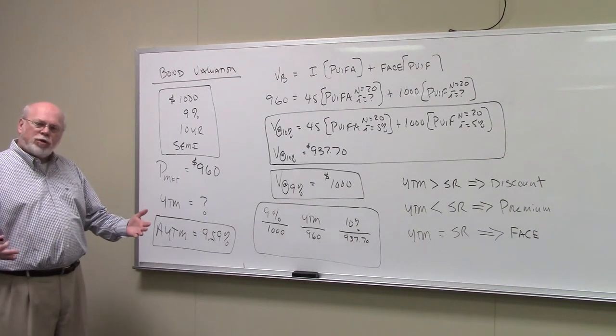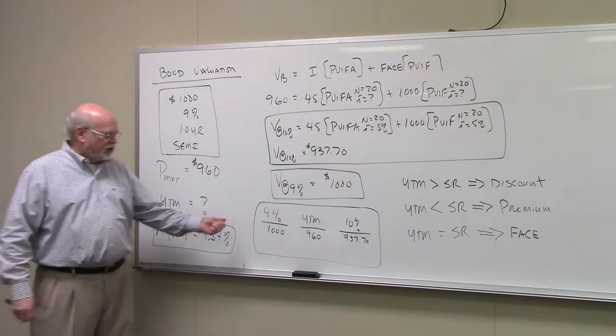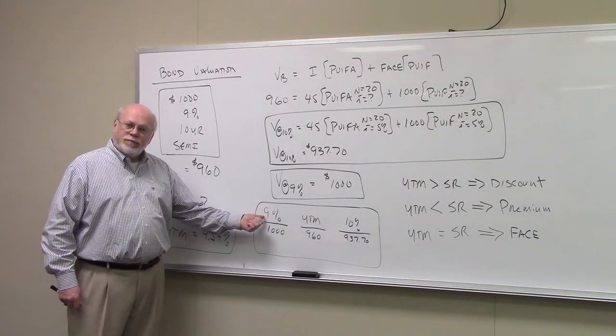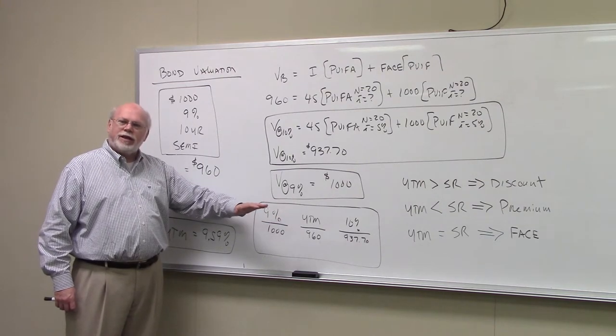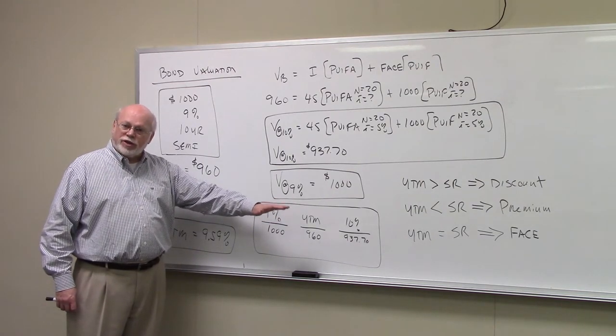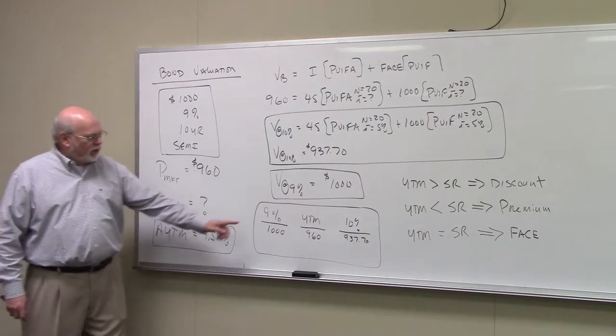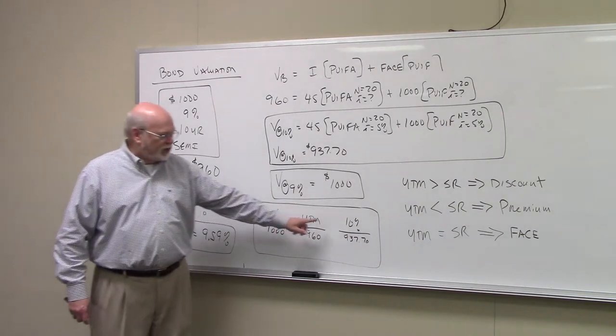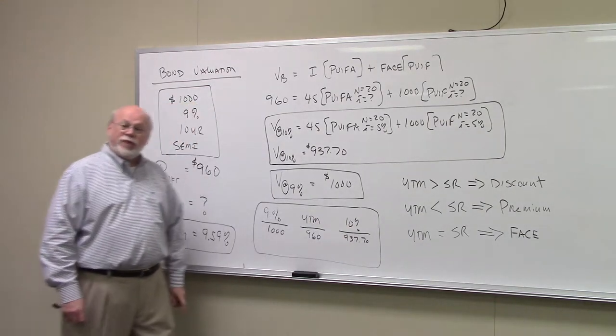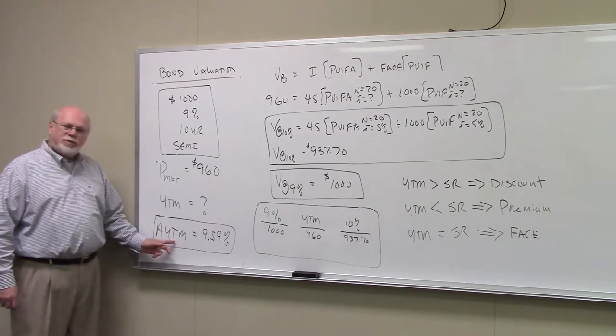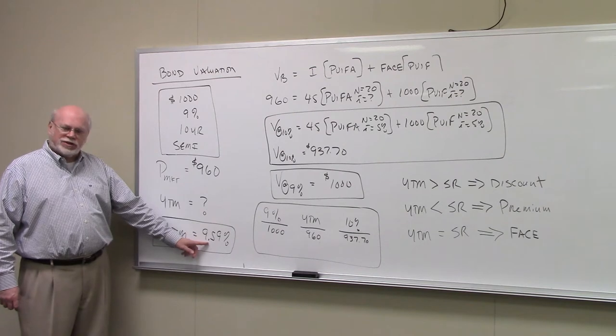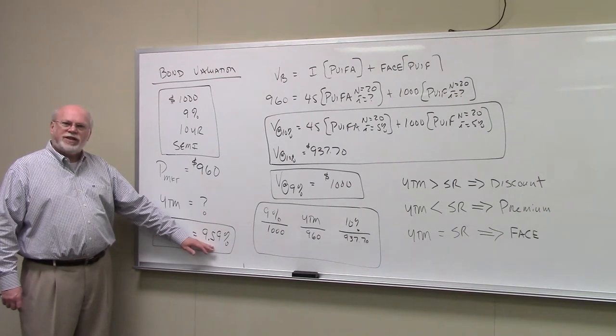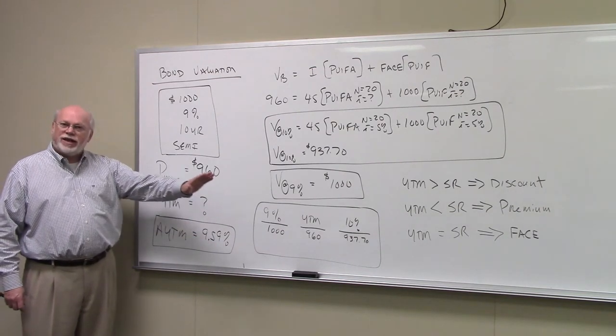And you'll recall from interpolation in a previous video when I showed you how to do that, that you want to set up a pitchfork. Note that the top of the pitchfork now is the possible yields on the bond. And we know that this is 9% and this is 10% because we calculated the approximate yield to maturity and found it to be 9.59%. Which simply tells us that the yield is somewhere between 9% and 10%.